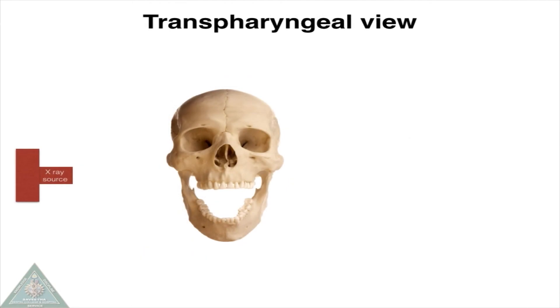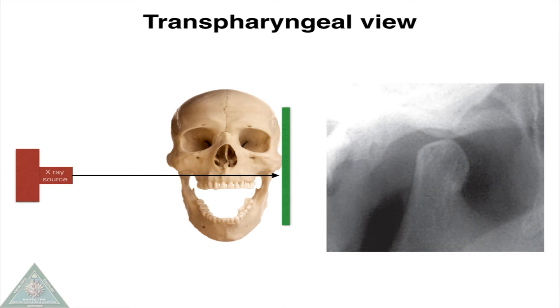Transpharyngeal view: the image receptor is placed touching the side of the patient's face and the X-ray beam passes through the sigmoid notch across the pharynx. The patient's mouth should be kept open. The resultant radiograph looks like this.